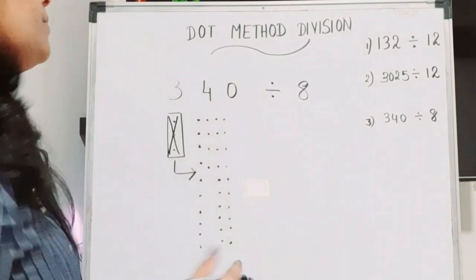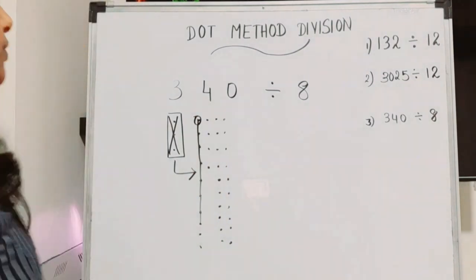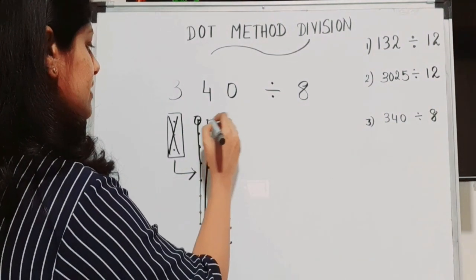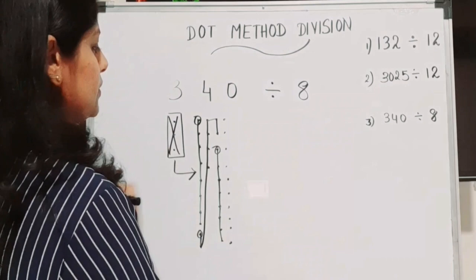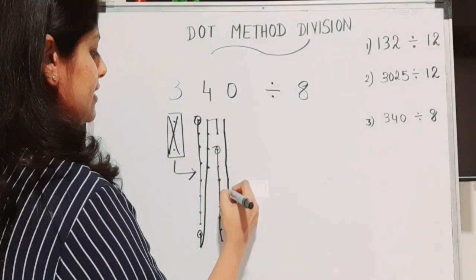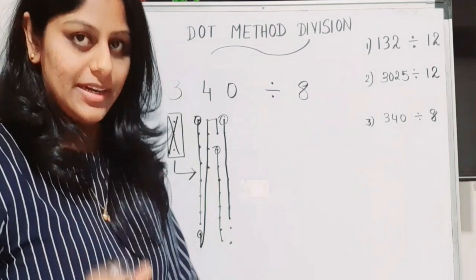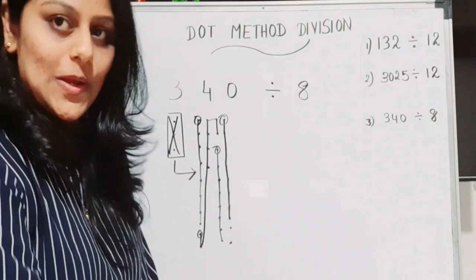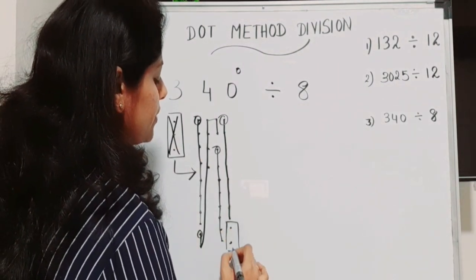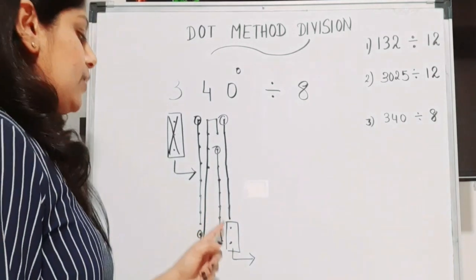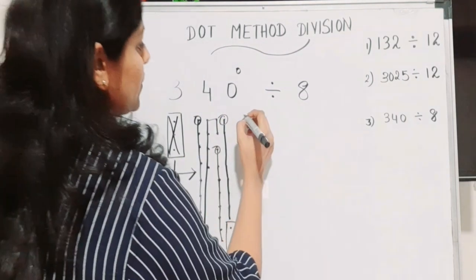Now we form groups of 8: group one, group two, group three, group four — that's 32 dots used. Two dots remain, and we cannot form another group of 8. But there is still a ones column, though it contains zero. The two remaining dots are moved forward to the ones column, where each represents 10, giving 20 dots.